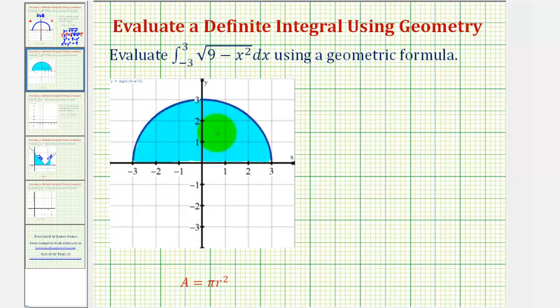Since the area of a circle is given by area equals pi r squared, and we have half a circle, this area is going to be equal to pi r squared divided by two. Notice how in this case, again, the radius is equal to three.